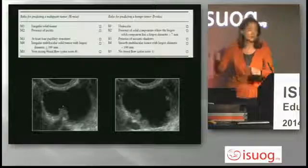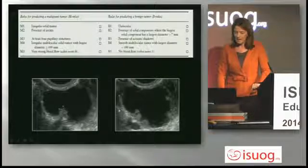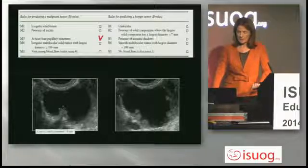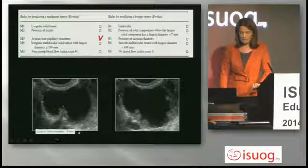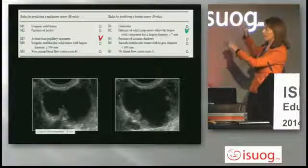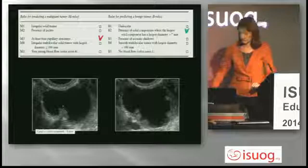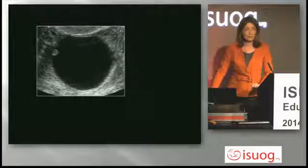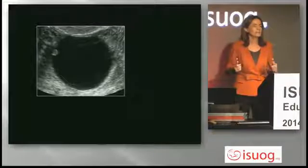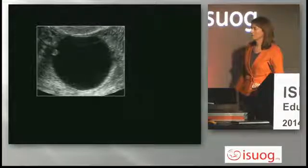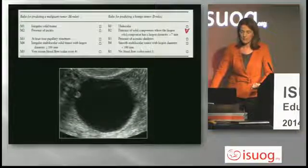The last case: at least four papillary structures present. We can also measure the solid component — six millimeters, so a second benign criterion applies. When we have one malignant and one benign criterion, we cannot apply the rules — not applicable. We have to refer this patient. Another case shows unilocular solid with a papillation of four millimeters; easy descriptors cannot be applied, but simple rules can.